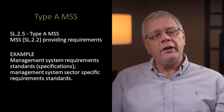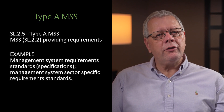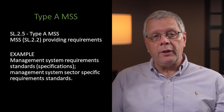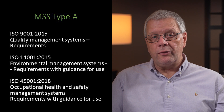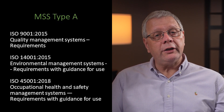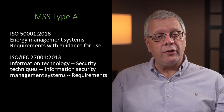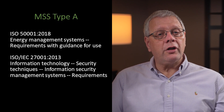This makes it easier to integrate the various requirements into one integrated management system. As a bonus, I've identified the key management system standards which fall under the Type A category, which provide requirements and have been developed using the Annex SL high-level structure approach. These include ISO 9001 for quality management systems, ISO 14001 for environmental management systems, ISO 45001 for occupational health and safety management systems, ISO 50001 for energy management systems, and ISO IEC 27001 for information security management systems.